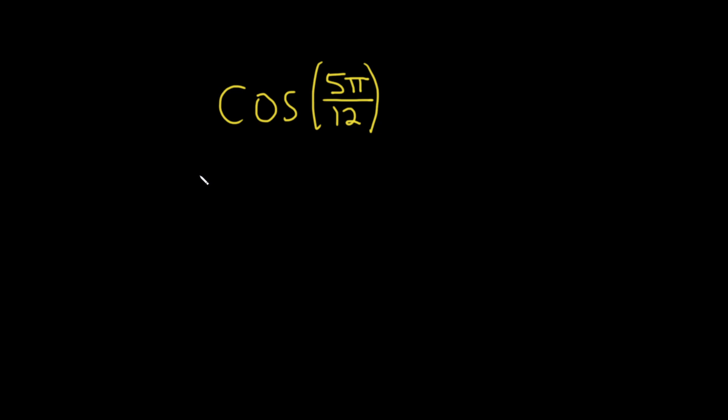Hello. In this video, we're going to find the exact value of the cosine of 5π over 12. To do this, we're going to use the sum and difference identities for cosine. So to do that, we have to write this as either a sum or a difference.